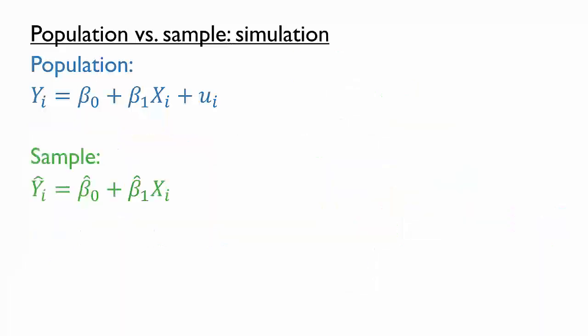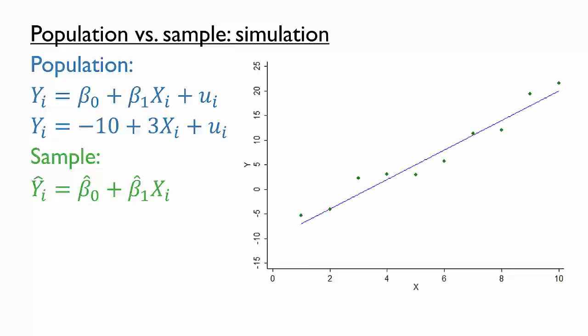Although we normally never know the parameters of the population relationship, we will generate a dataset, that is a sample, using a data generating process that we choose. In this process, the intercept β₀ is negative 10, and the slope β₁ is positive 3. Here is the set of data that we generated from this process, with the population relationship shown in blue and the data points shown in green.